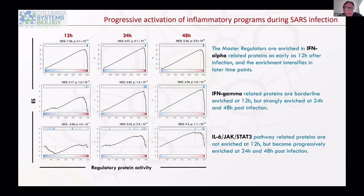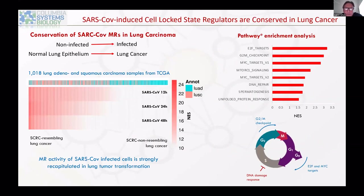The GSEA plot shows extremely high activation at 12, 24, and 48 hours for programs related to replication, interferon gamma response, and IL-6 JAK-STAT3. The latter is almost non-existent at 12 and 24 hours but becomes very dominant at 48 hours, and we expect this continues at even later time points.